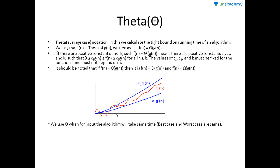Now let's talk about Theta, which is also known as the average case. In this we calculate the tightest bound on the running time of the algorithm. It should be noted that if F(n) = Θ(G(n)) is true, then it should also be true that F(n) = Ω(G(n)) and F(n) = O(G(n)). We must satisfy both these conditions — Big O and Big Omega — to prove Theta. That's why Theta lies between Big Omega and Big O. We use Theta when for any input of the algorithm it will take the same time, and in that case the best case and the worst case will be the same.